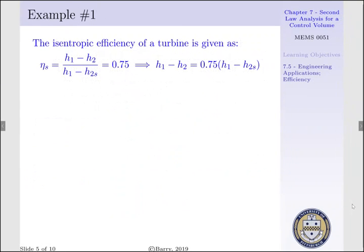Now, our isentropic efficiency is given as H1 minus H2 per H1 minus H2S equals 0.75. Or, the quantity H1 minus H2, our actual work, is equal to our efficiency, 0.75, times H1 minus H2S.